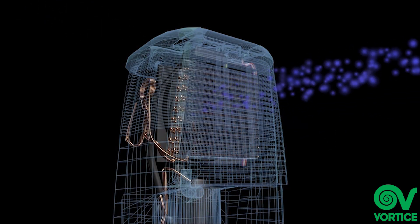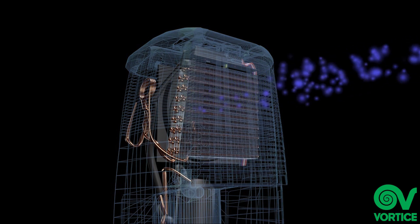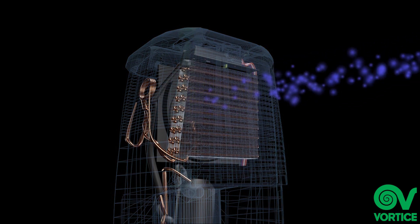The system consists of an evaporator unit, a condenser unit, an expansion valve, and a compressor.